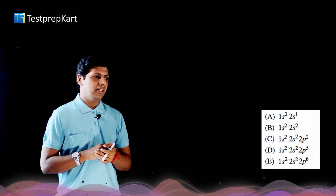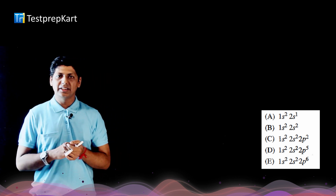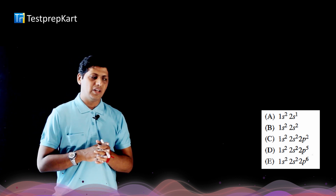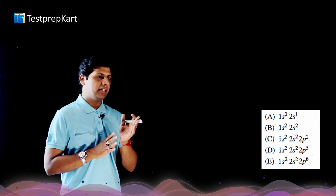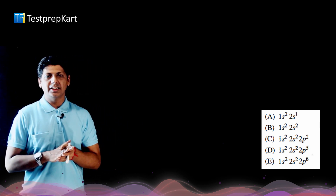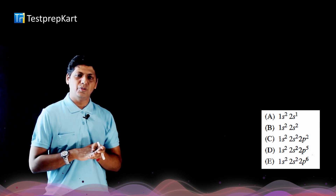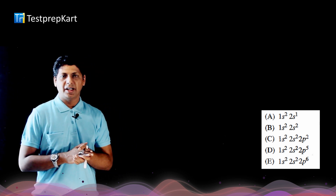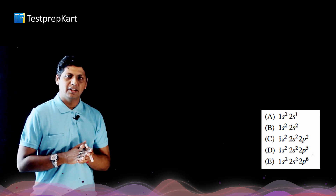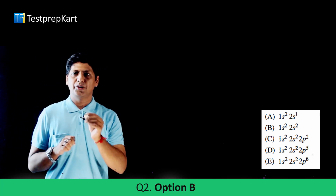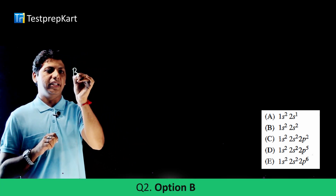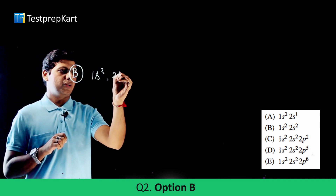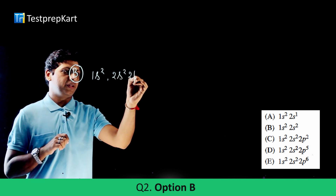Option A has only one valence electron (2s¹), and option B has only two valence electrons (2s²). Option C, with configuration 1s²2s²2p², has four valence electrons — this is the carbon atom, which shows four valence bonds. So option C is correct for question 2, with configuration 1s²2s²2p².